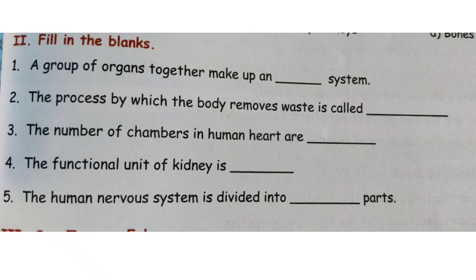Number 3: The number of chambers in the human heart are __. Answer: 4 chambers. Number 4: The functional unit of the kidney is __. Answer: nephron. Number 5: The human nervous system is divided into __ parts. Answer: 2 — two parts.